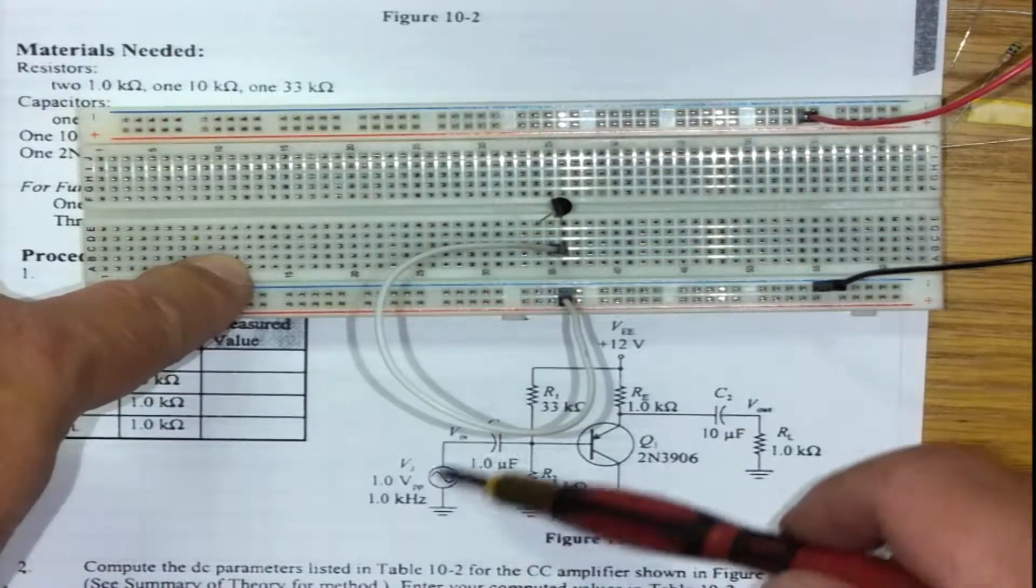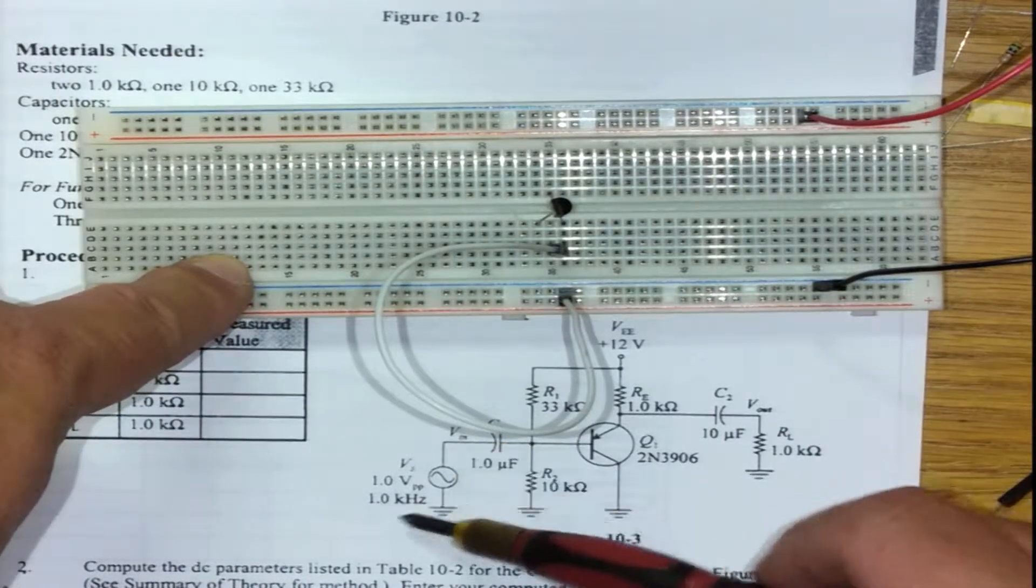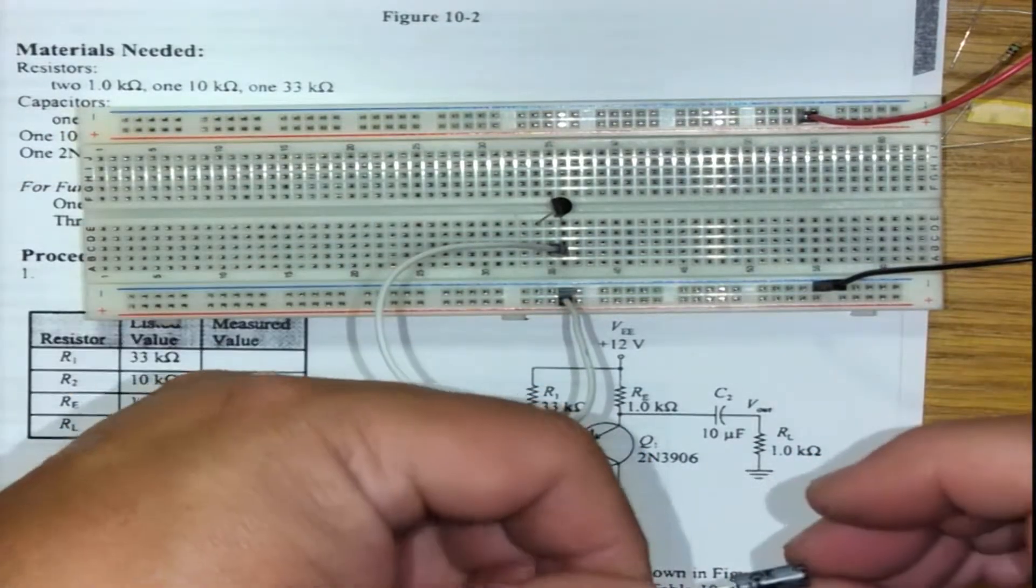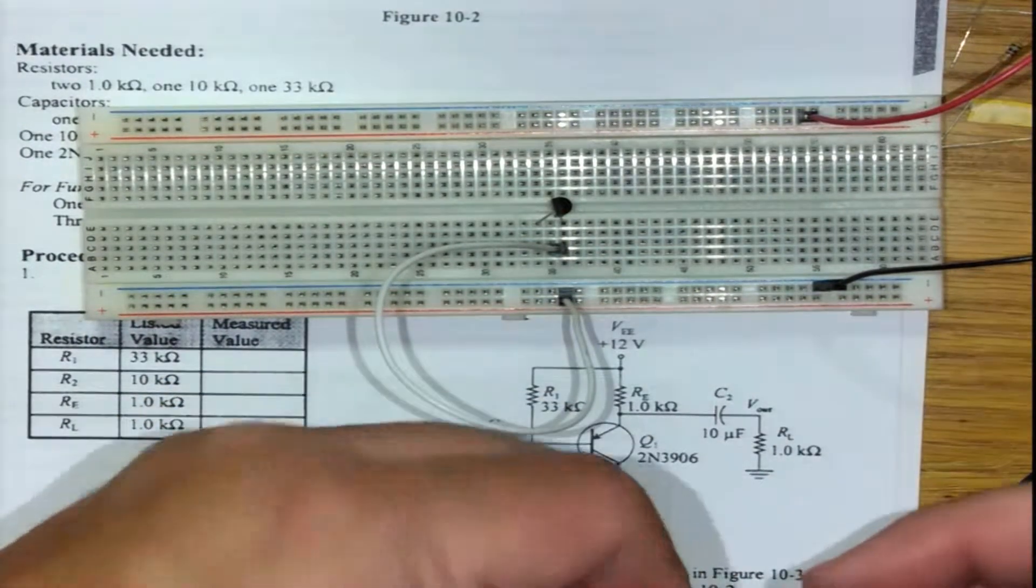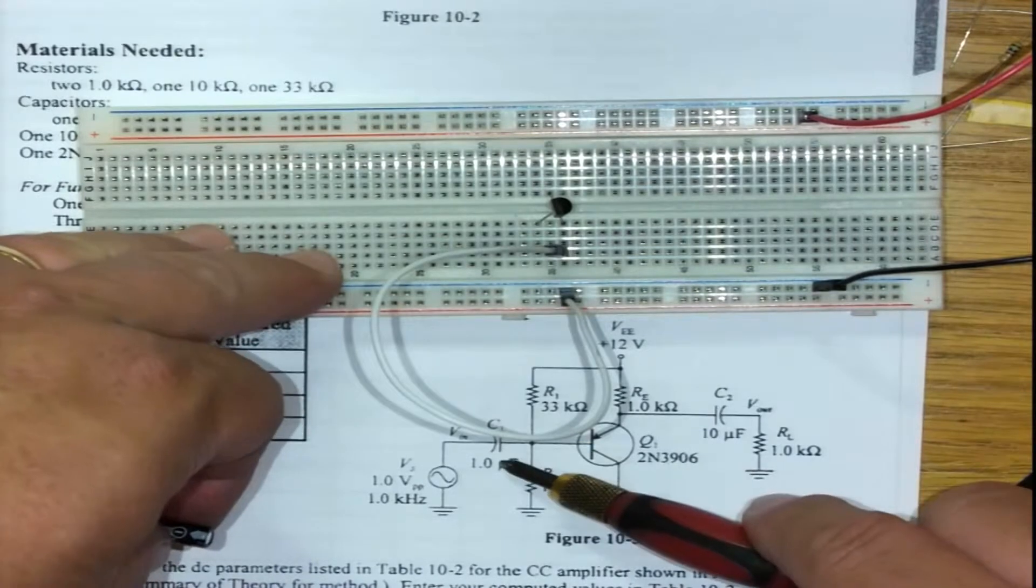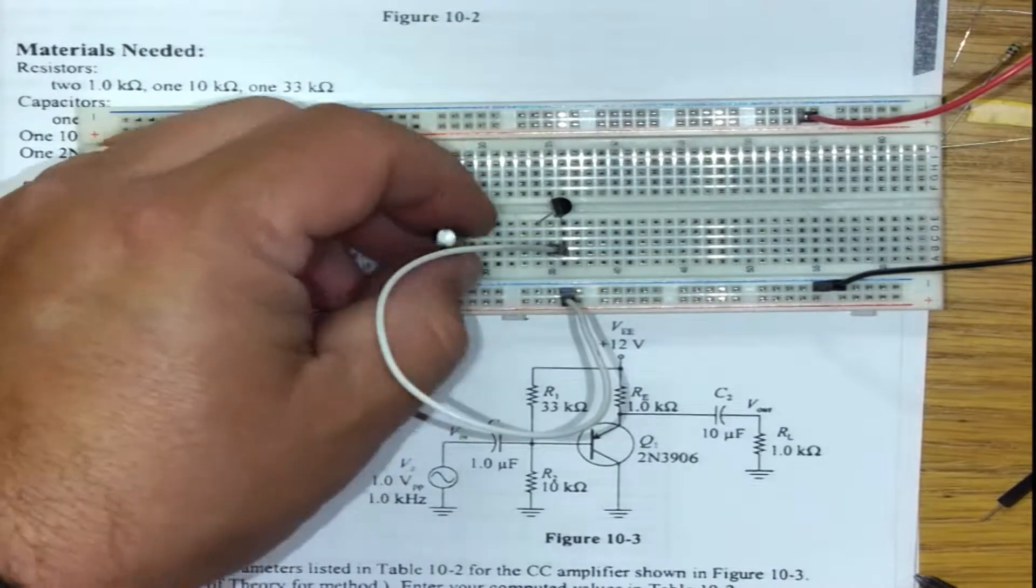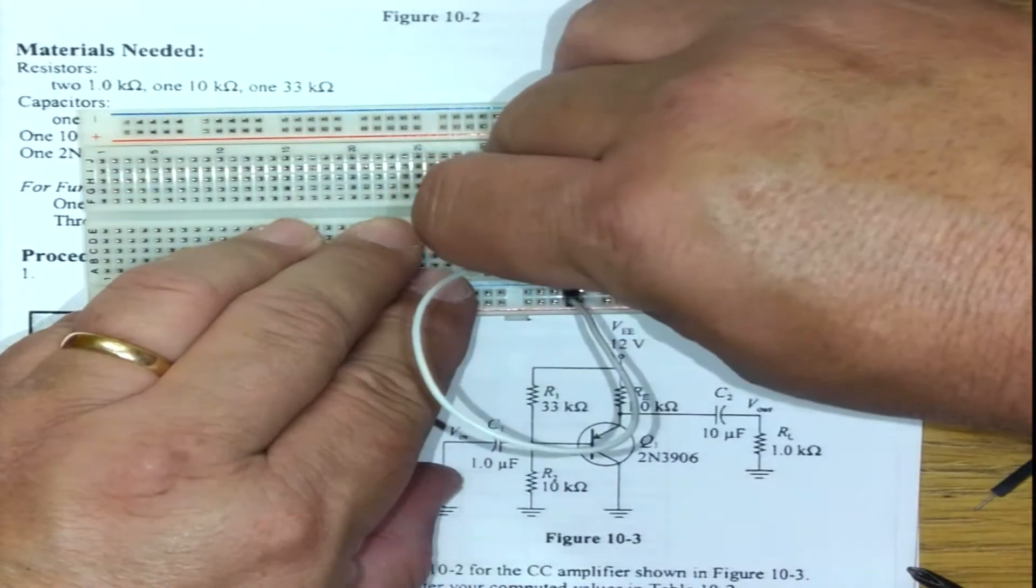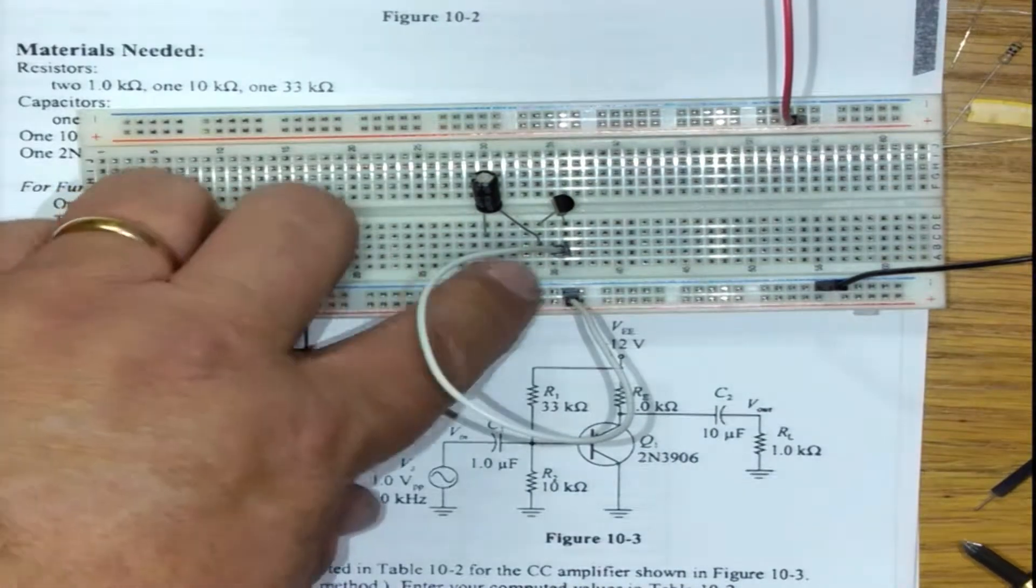We've got the signal generator, which is an off-breadboard component or instrument, connecting to C1. If I find C1, which is a one microfarad capacitor, make sure the positive—the straight line on the diagram—connects to the base of the PNP transistor. My base is this side, and I connect it like so.